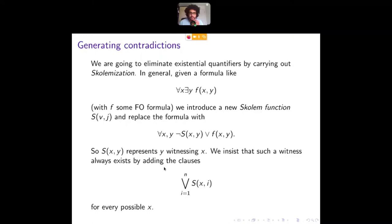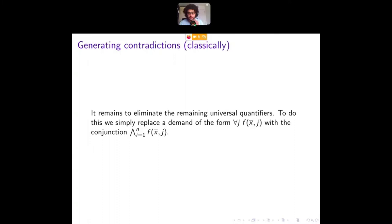Now the universal quantifiers are easier to get rid of. Because if we want, for example, that for every J that this thing holds, we can just take a big conjunction and it's the same thing. So this is how you generate the CNF pigeonhole principle from the first order version. And this is an old version that has been looked at a lot.